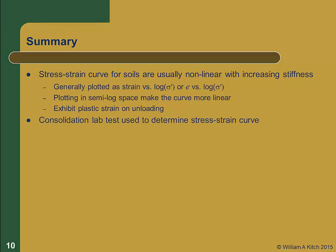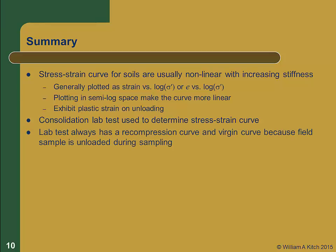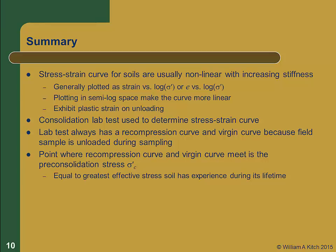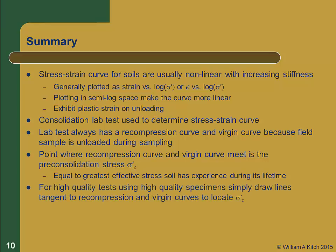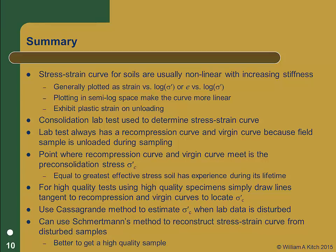We use the laboratory consolidation test to determine our stress strain curve. Lab tests will always show a recompression and a virgin curve because the field sample is unloaded during the sampling process. The point where the recompression and virgin curves meet is the pre-consolidation stress and it represents the greatest effective stress the soil has ever experienced. If we have high quality tests with high quality specimens, we can easily draw tangents to the recompression and virgin curves and locate the pre-consolidation stress. When the lab data are moderately disturbed, you should use Casagrande's method as a consistent way to estimate the pre-consolidation stress. Finally, we can use Schmertmann's method to reconstruct field compression curves for lab tests on disturbed samples. However, it is better to get a high quality sample and generate a high quality lab curve.